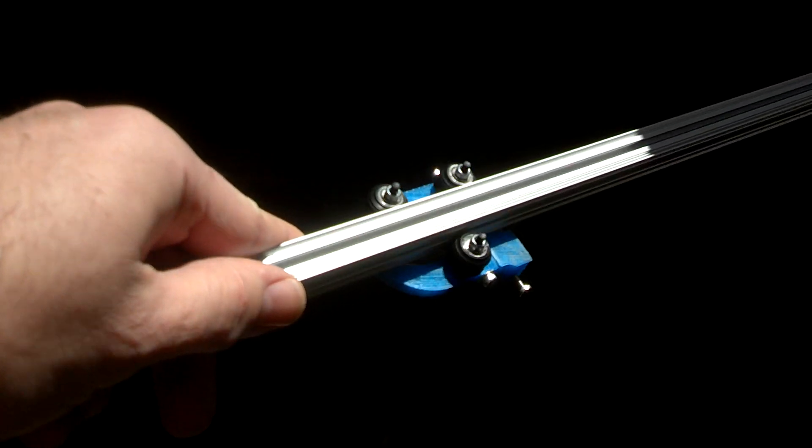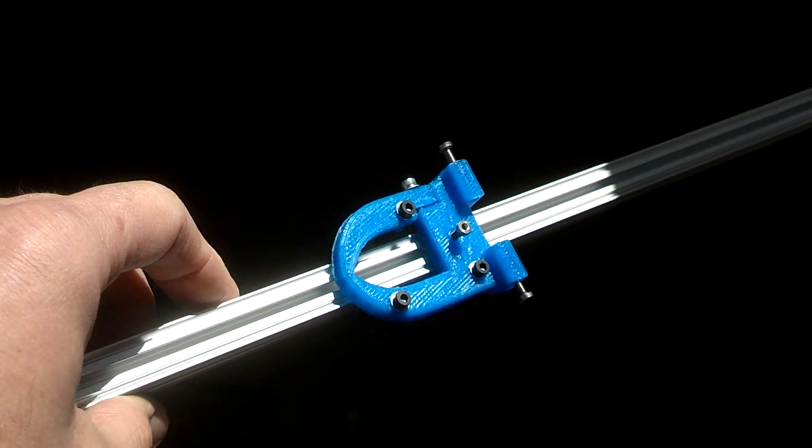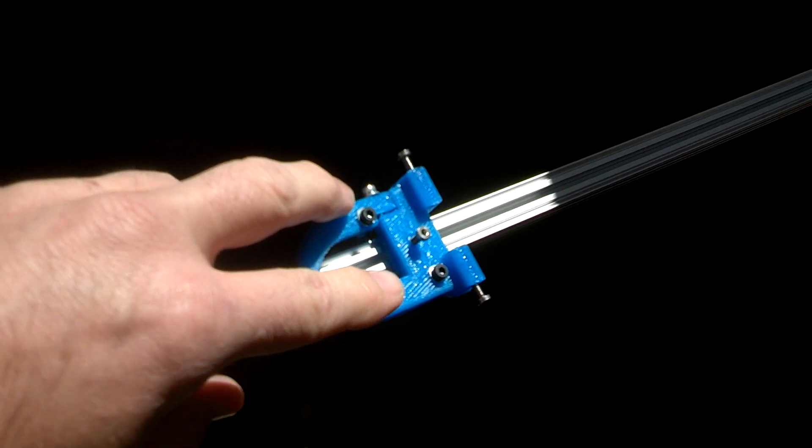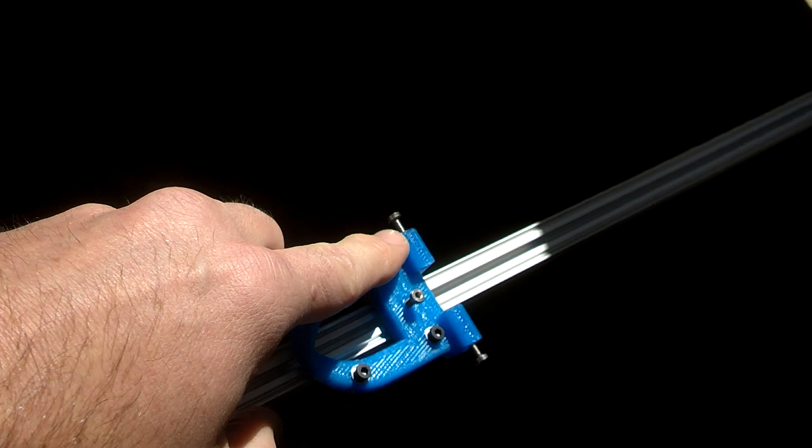So you can see there I've got three roller set up. And this is for a Delta robot. So the Delta arms attached to these little bosses right here and here.